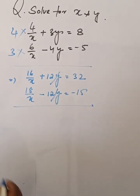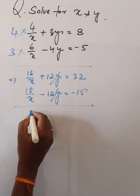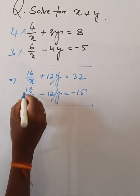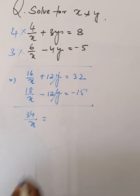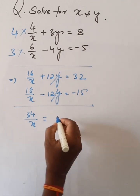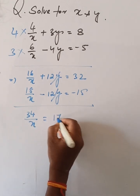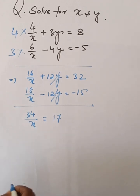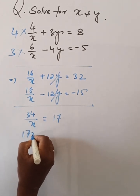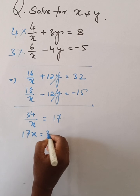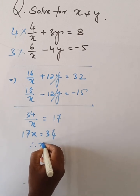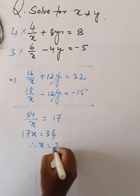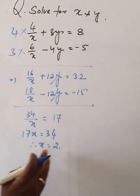The y terms are cancelled. Then 34 by x is equal to 17, so 17x is equal to 34, therefore x is equal to 2.